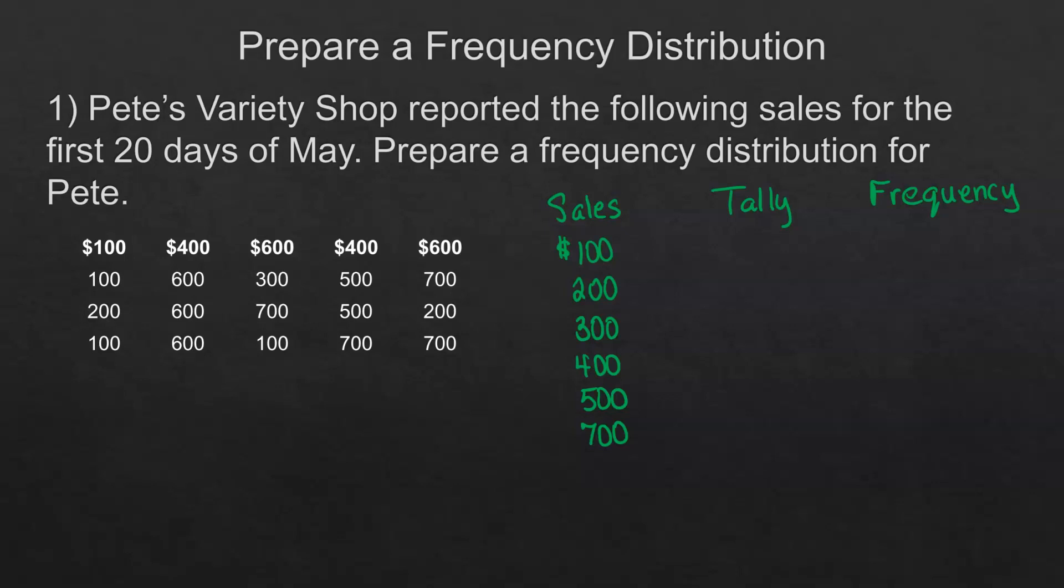Then we just go through and count. How many times does 100 occur? There's 1, 2, 3, and another one, there's four of them and so we have a frequency of four for the 100s. Then we go on to 200, there's one and two so we've got two for those. 300 occurs one time and then 400 there's one, two, so two times on frequency.